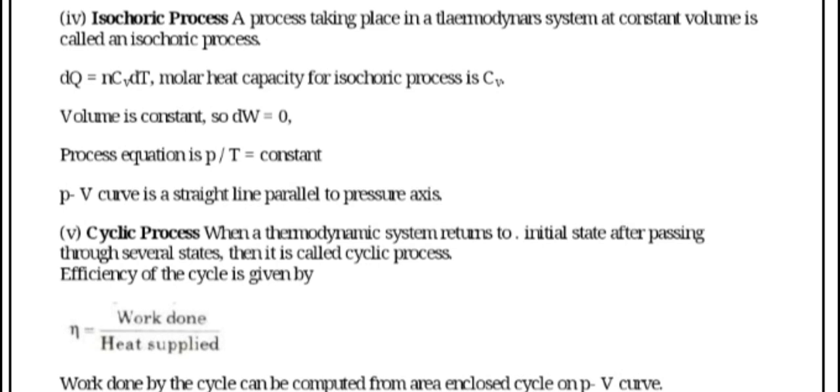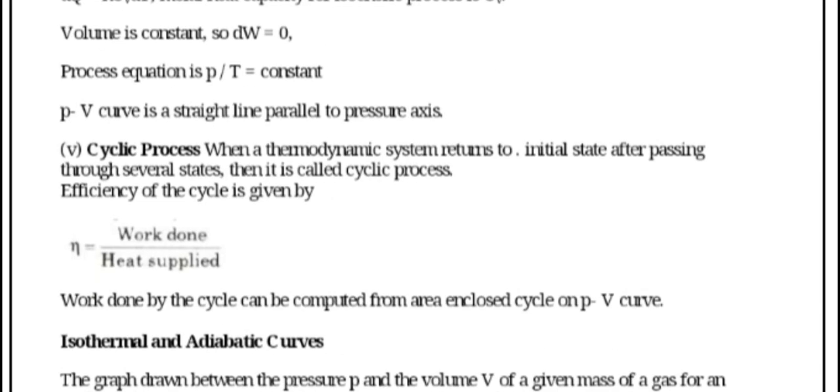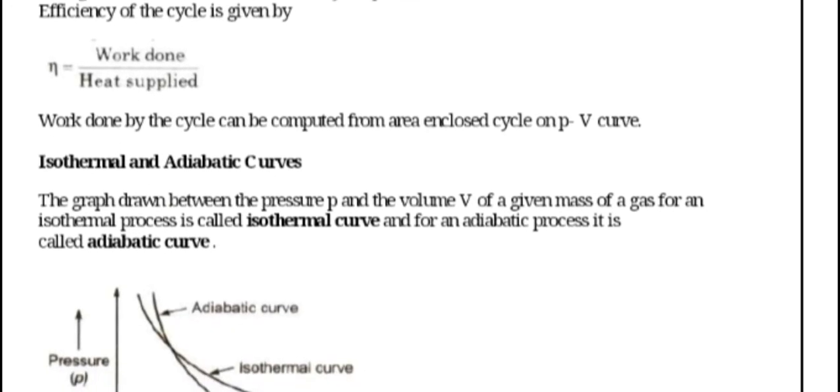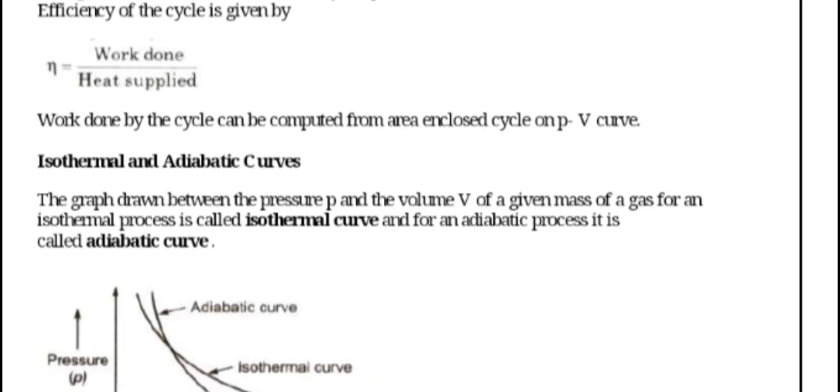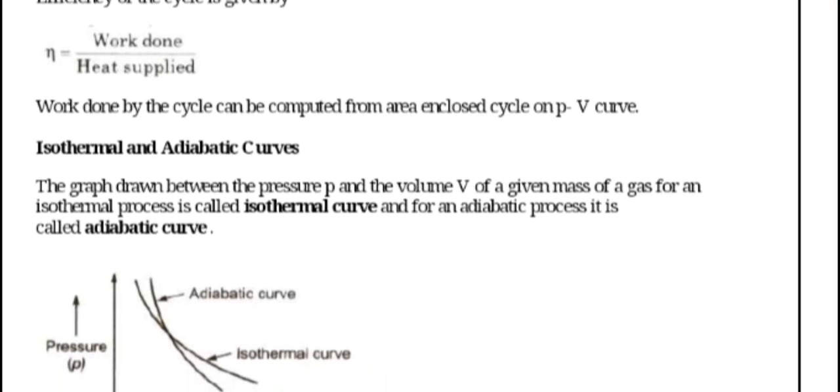Volume is constant, so dW equals zero. Work done by the cycle can be computed from the area enclosed by the cycle on a PV curve.